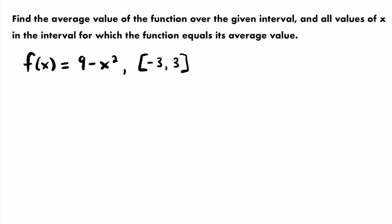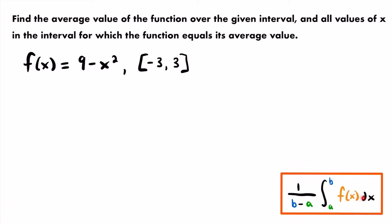Our function f(x) is 9 minus x squared and our given closed interval is from negative 3 to 3. To calculate the average value, we first identify a and b: a is the lower bound, b is the upper bound. So a equals negative 3 and b equals positive 3.